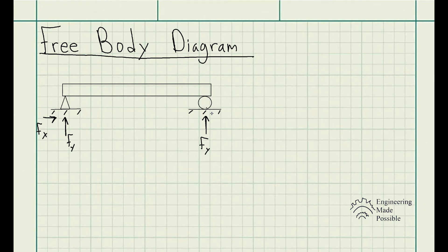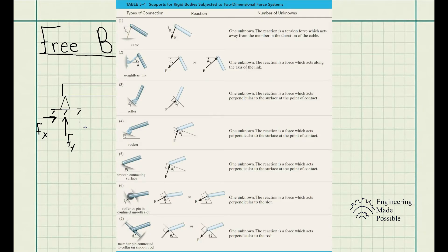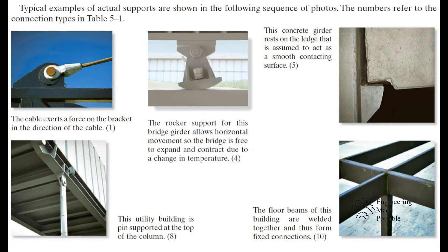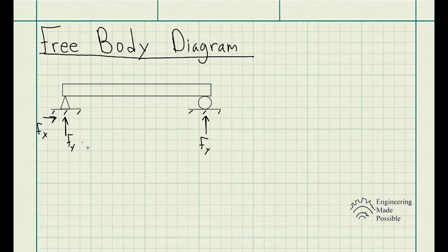For a roller, the reactionary force is always along the Y direction. For a hinge, you have both X and Y components for the reactionary force. You can always refer to the table in your statics textbook, which includes a comprehensive list of all the different supports and their reactionary forces. I recommend everyone study that table — the more problems you do, the more intuitive it becomes. I'll show an image of that table so you can reference it.